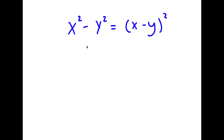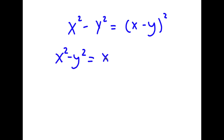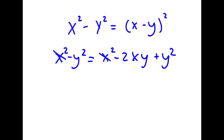In this problem, I have x squared minus y squared is equal to x minus y squared. To start, I'm going to first expand x minus y squared. So now I have x squared minus y squared is equal to x squared minus 2xy plus y squared.